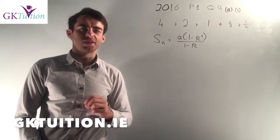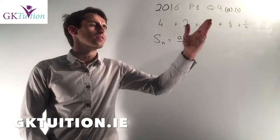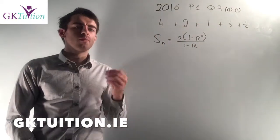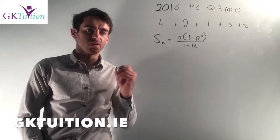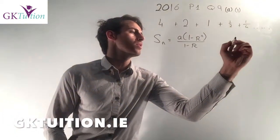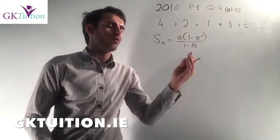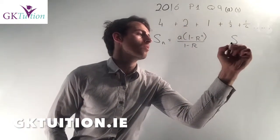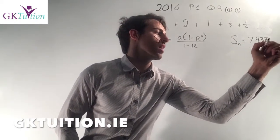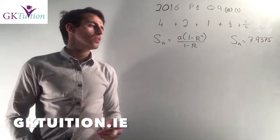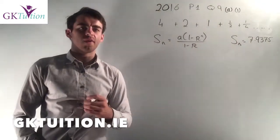Part 1 of this question asks me to find out how many stages the point has gone through before it has travelled 7.9375 units. So I want to know how many of these stages I've gone through before the sum of all the stages adds up to 7.9375. So they're telling me the S_N, the sum of the terms, is 7.9375.